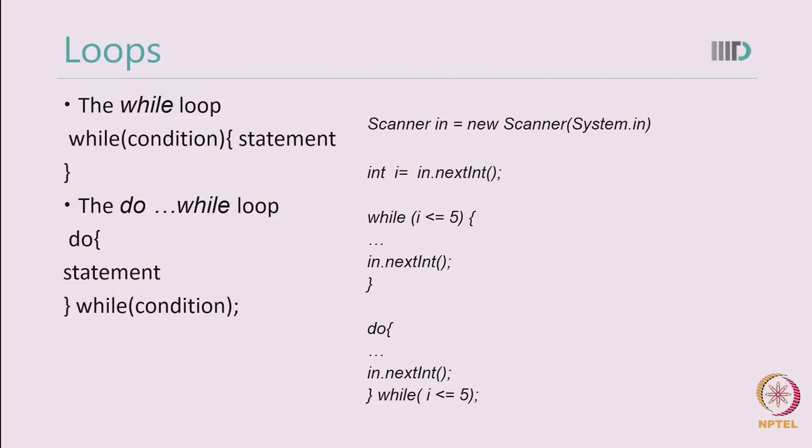In the second case, I am using a do while loop which is also checking for the same condition. An essential difference between while and do while is that the do while loop execute at least once. For example, no matter what the value of i is,